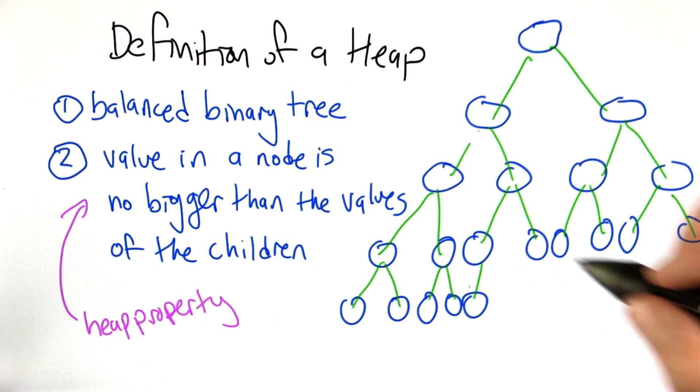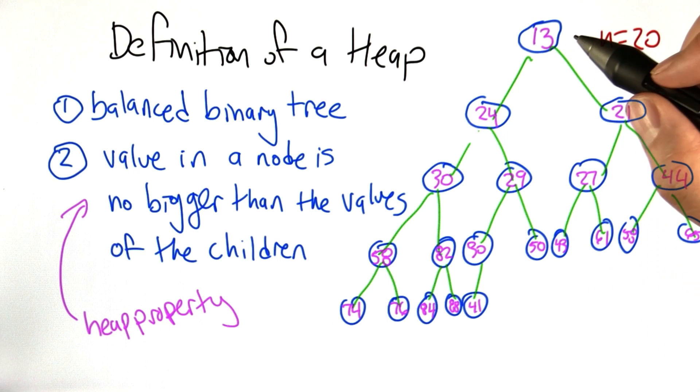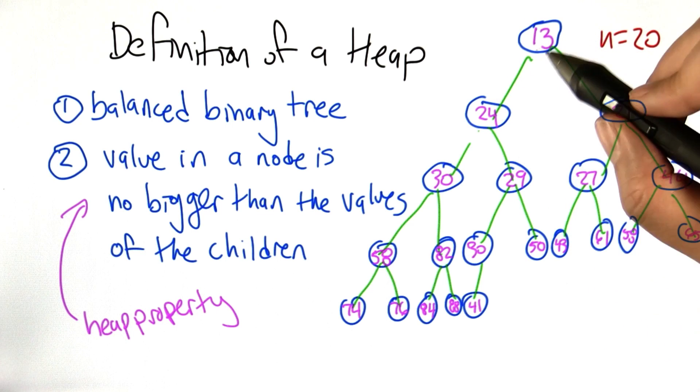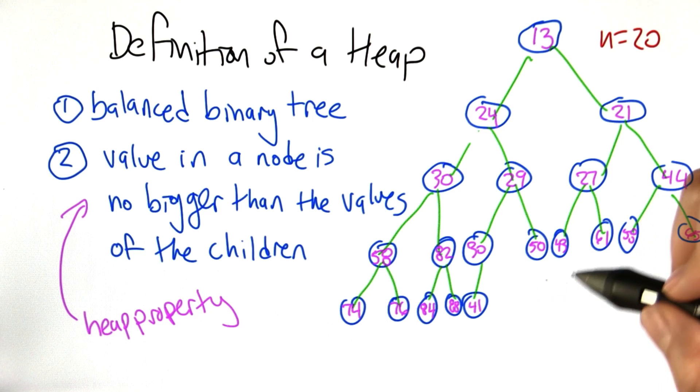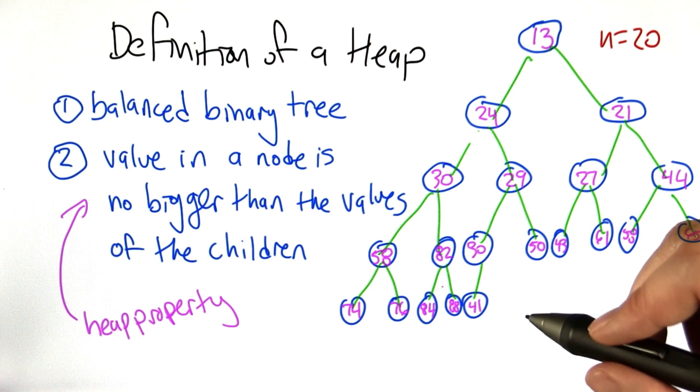So let me show you an example. So here's a balanced binary tree with 20 nodes, and I'm going to fill values in here that satisfy the heap property. And now I filled in the nodes of the tree with values in a way that satisfies the heap property.